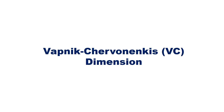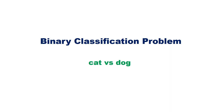In this video, let us discuss about the Vapnik-Chervonenkis dimension, or VC dimension. Consider a binary classification problem — for example, we want to classify an image as either cat or dog.